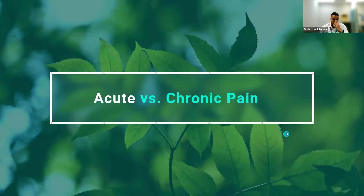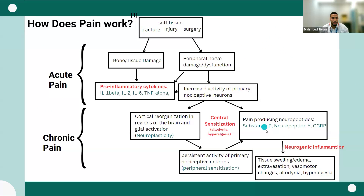Let's get a general refresher on acute versus chronic pain. With acute pain, it can result through multiple different ways — fractures, soft tissue injury, surgery — that could lead to bone or tissue damage or peripheral nerve damage, or even dysfunction, leading to pro-inflammatory cytokines. This can increase the activity of primary nociceptive neurons. Generally, our body resolves it through the production of certain inflammatory molecules, endogenous endocannabinoids, or endogenous opioids.